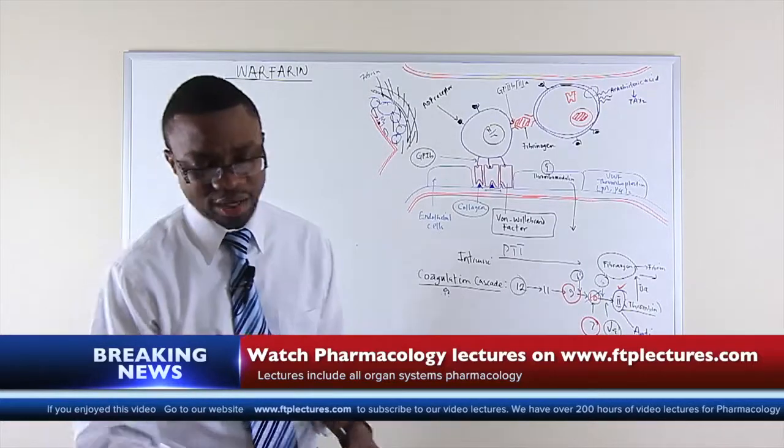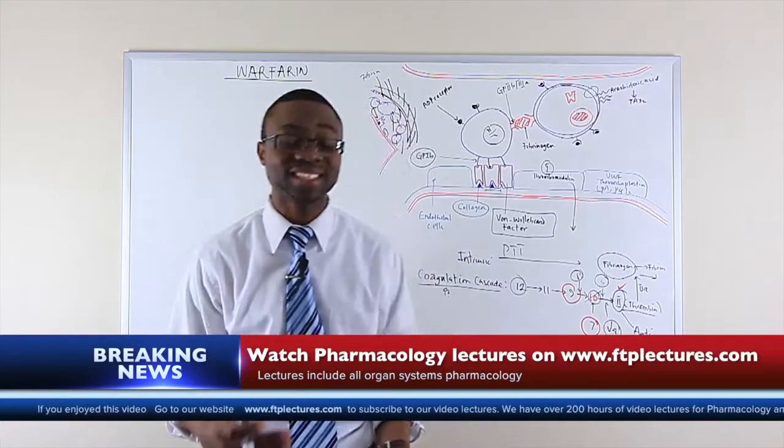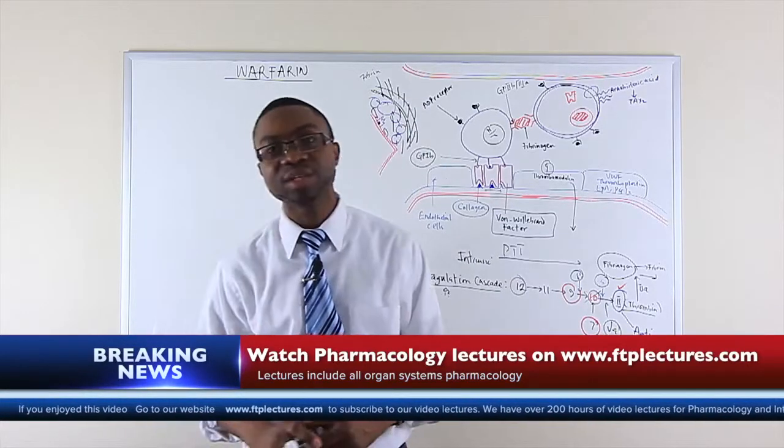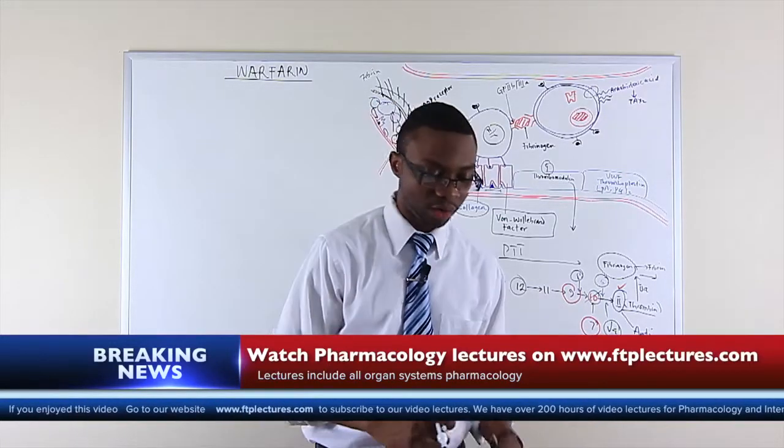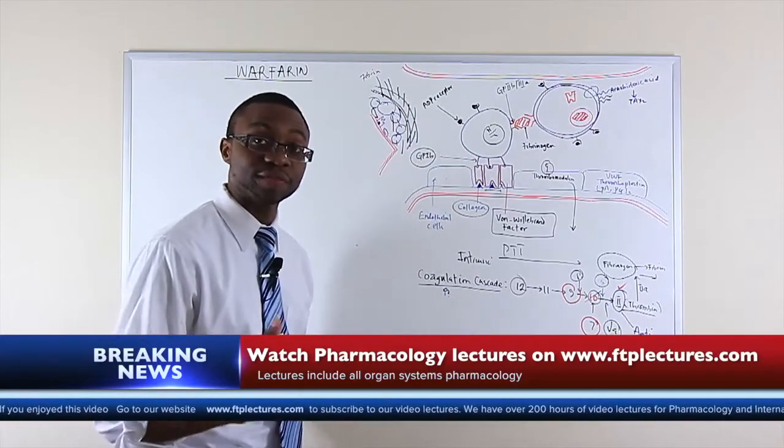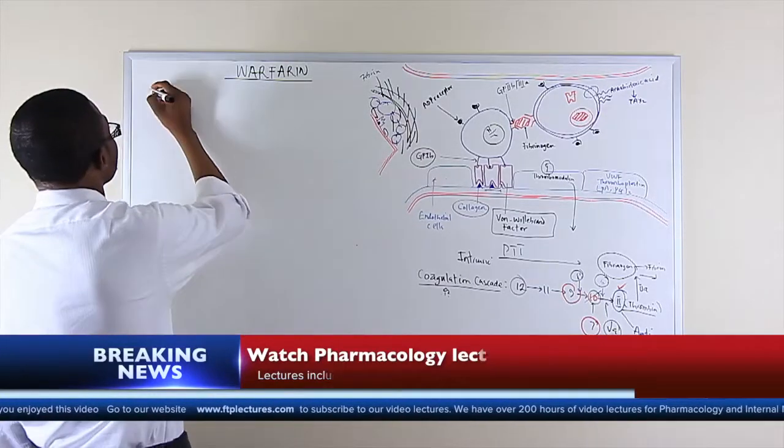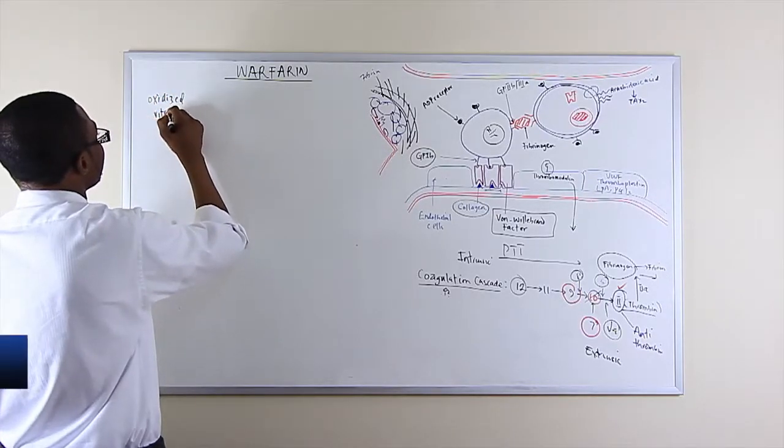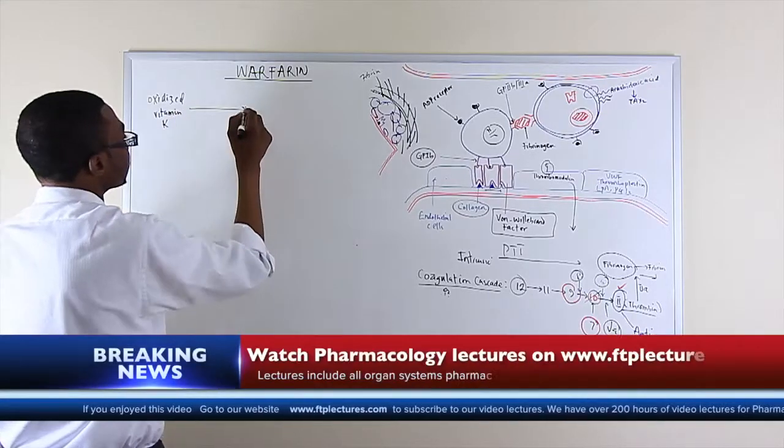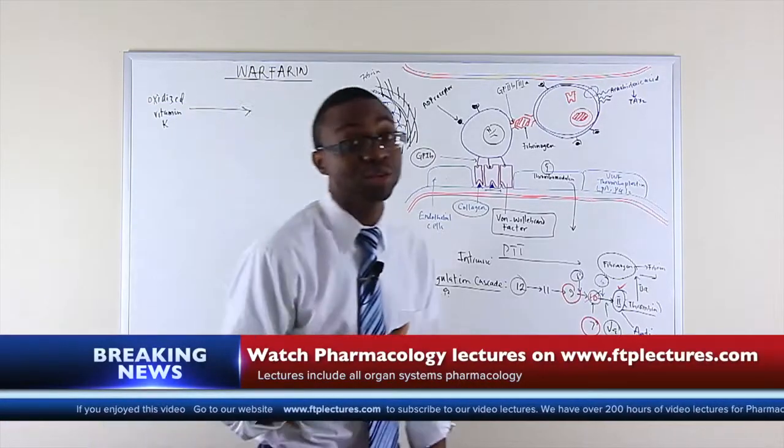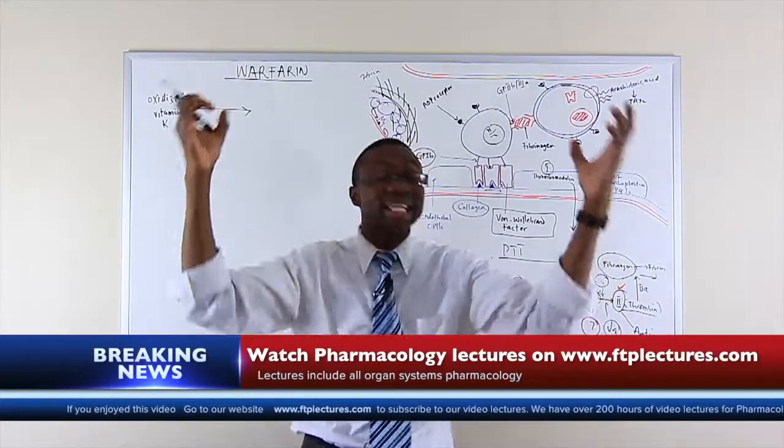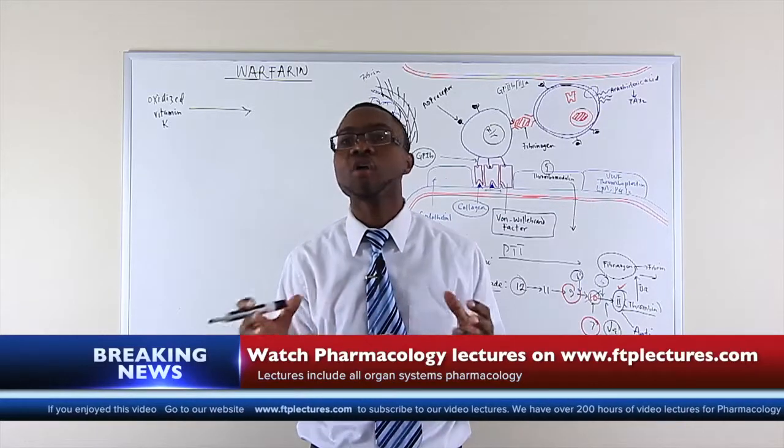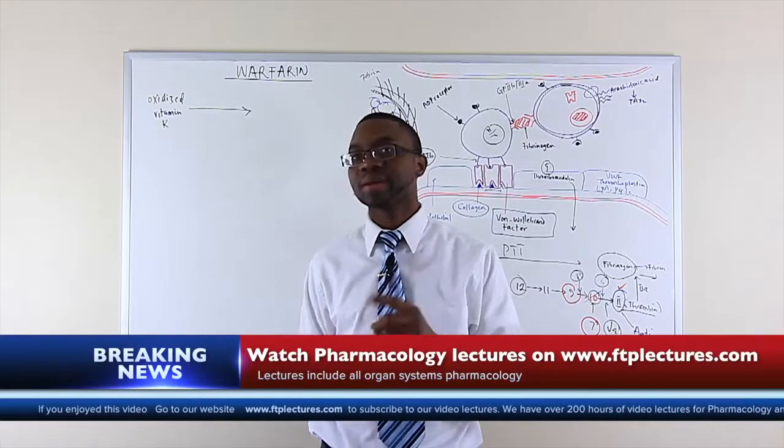Before we actually move on, how are these factors actually activated in the body? That is definitely worth talking about because they require vitamin K. Before we move on, I have to tell you where all these coagulation factors are coming from. They're made in the liver. All coagulation factors are made in the liver except factor 8.